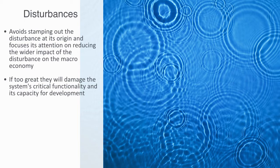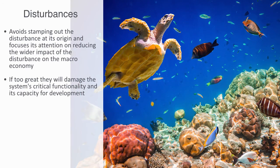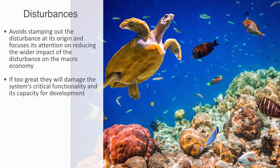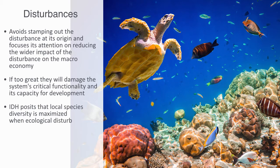This is most clearly expressed within ecology by what is called the Intermediate Disturbance Hypothesis, IDH for short. IDH is a non-equilibrium model used to describe the relationship between disturbance and species diversity within an ecosystem, where diversity is correlated to the system's long-term resilience.